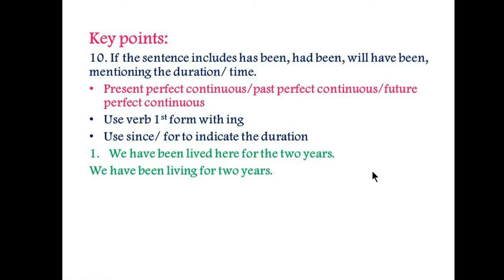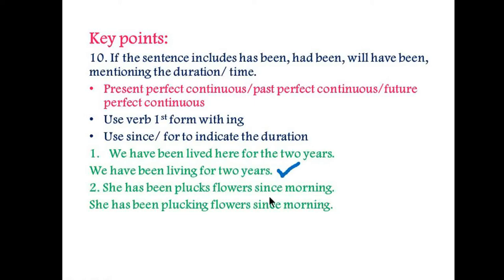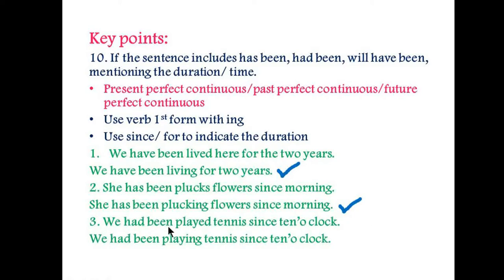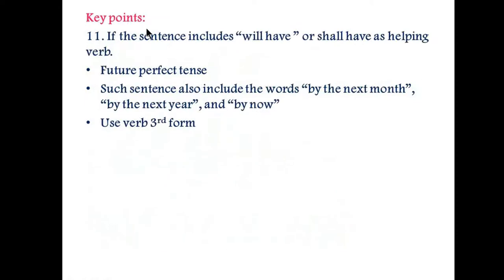The correct form is 'We have been living for two years.' Next: 'She has been plucked flowers since morning' is incorrect. 'She has been plucking flowers since morning' — you are using the verb first form with '-ing', so this is correct. Another example: 'We had been played tennis since 10 o'clock' is incorrect. 'We had been playing tennis since 10 o'clock' — using the verb first form with '-ing' — is correct.